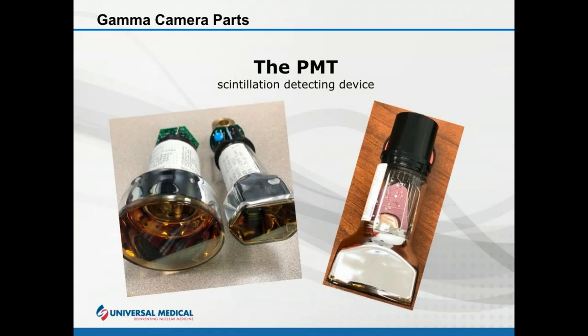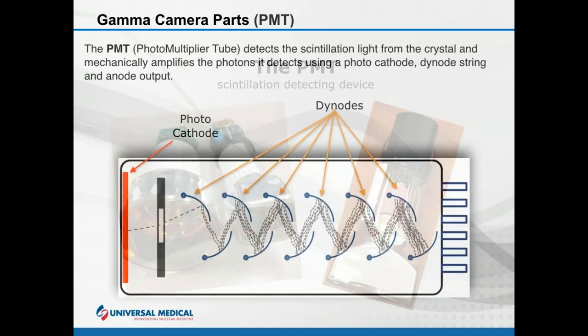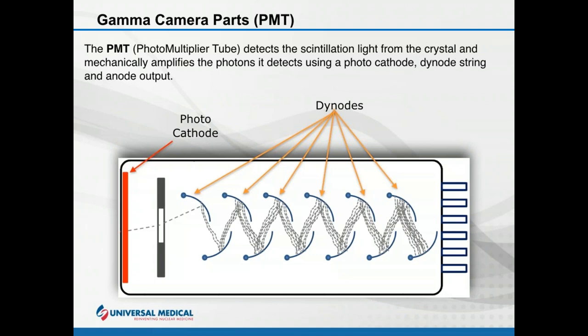Having made it through the collimator and impacted the crystal causing scintillations, we hit photomultiplier tubes. PMTs come in many shapes and sizes — circular, square, octagon — depending on the manufacturer. The basic principle of every photomultiplier tube is: a photocathode goes through a focusing grid, runs through stages of dynodes, and goes to an anode.